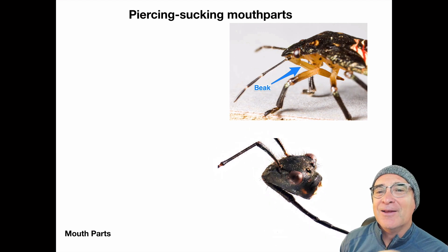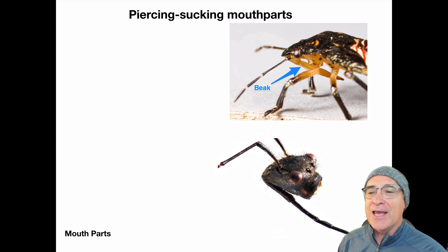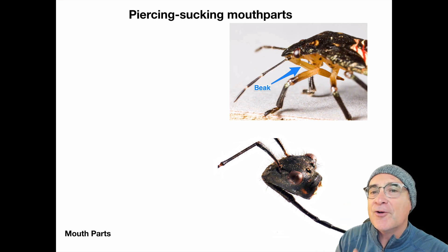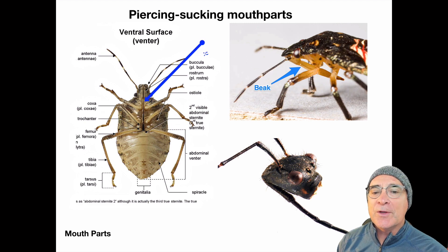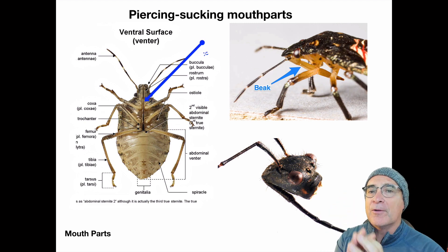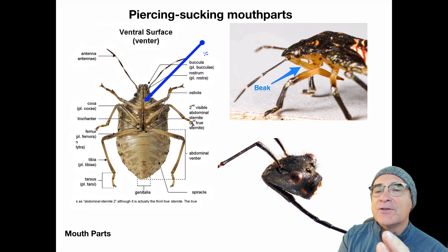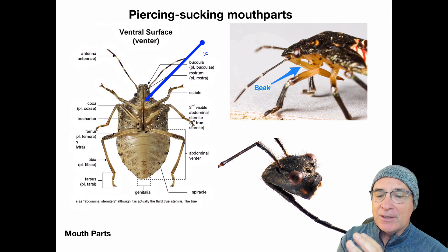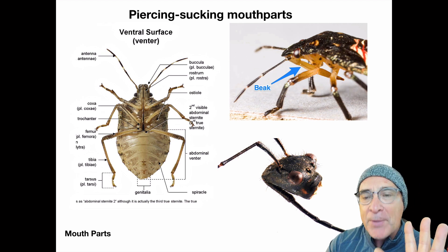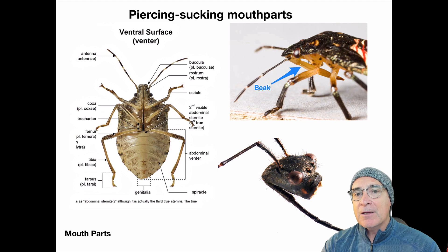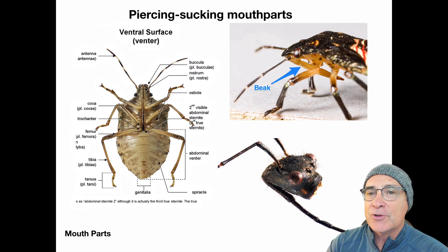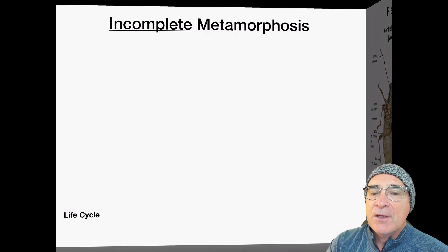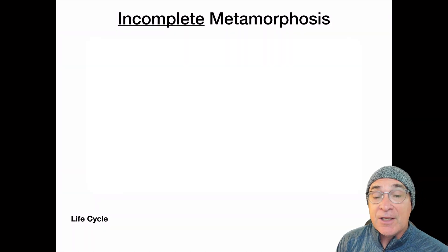On this specimen we removed the body so you can see the head and beak — notice how it's tucked underneath the head. You'll also notice the beak sits within the rostrum, which has two halves on the bottom of the head that provide support and alignment. That's the piercing and sucking mouth part: it's sharp and hollow, allowing it to pierce and then suck the juice from its prey.